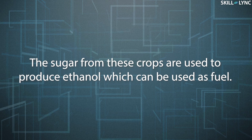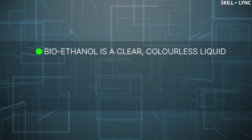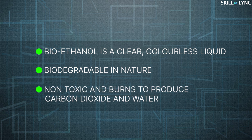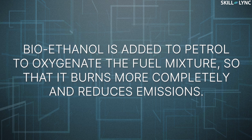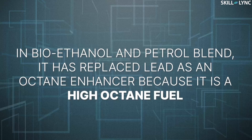The sugar from these crops are used to produce ethanol which can be used as fuel. Bioethanol is a clear, colorless liquid which is biodegradable in nature. It is non-toxic and burns to produce carbon dioxide and water. Bioethanol is added to petrol to oxygenate the fuel mixture so that it burns more completely and reduces emissions. In this blend, bioethanol has replaced lead as an octane enhancer because it is a high octane fuel.